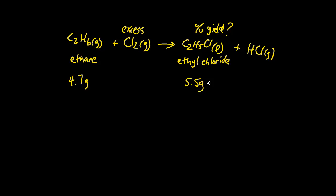That should tell you right away that if this 5.5 grams is given, this is what they actually got, which could have been more or could have been less than the theoretical yield, since percent yield is actual over theoretical.